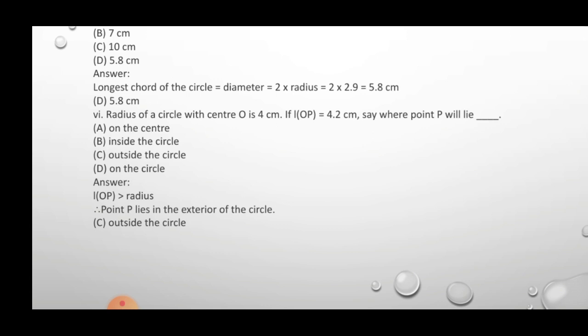Question 6: The radius of a circle with center O is 4 cm and OP = 4.2 cm — determine where point P lies. Since the distance OP (4.2 cm) is greater than the radius (4 cm), point P lies outside the circle, i.e., in the exterior of the circle.